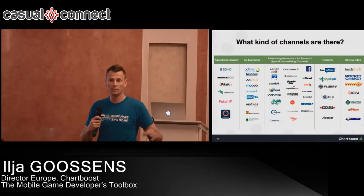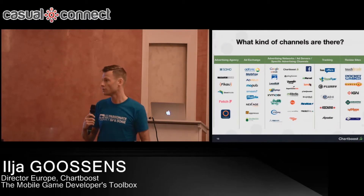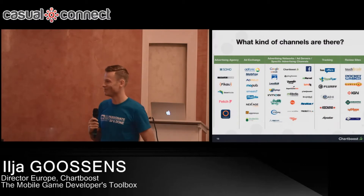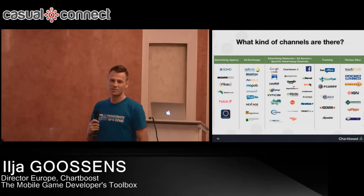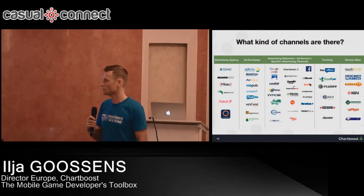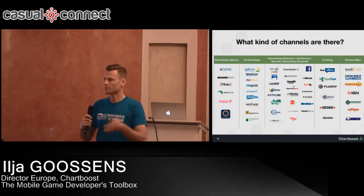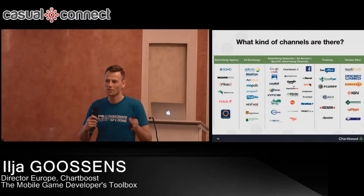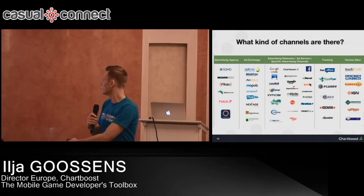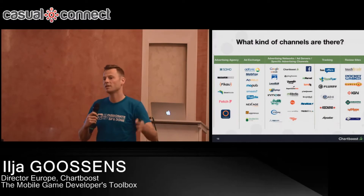Ad exchanges do mediation — they plug in all kinds of ad networks and do the mediation for you. The downside is you don't have transparency over what's shown in your game, or as an advertiser where your ads will be shown. Then there's third-party tracking, which has come up very rapidly in the last 12 to 18 months — solutions like HasOffers, Mobile App Tracking, AppsFlyer, and AdX. A lot of game developers spend across 40 different ad networks, and you want to know the return on investment from every network. These third-party tracking solutions create one dashboard giving you insight into where you bought a user, what you spent, and what you got back — so you're better able to optimize.